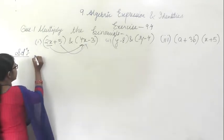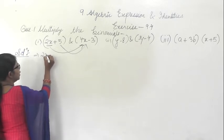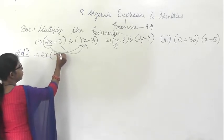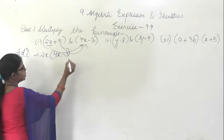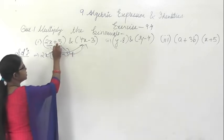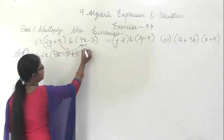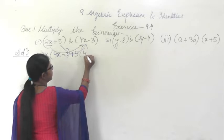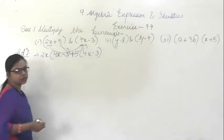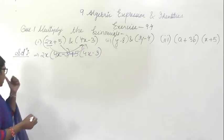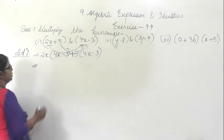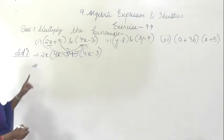Here I am starting with 2x multiplied by (4x minus 3), plus sign is there, then this 5 will be multiplied with the whole term. Write down the first step. Second: multiply inside the bracket.